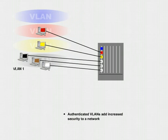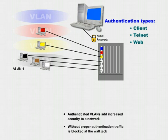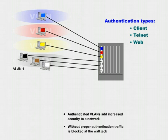A 7000-series OmniSwitch offers a feature known as Authenticated VLANs. Authenticated VLANs add increased security to a network by forcing users to log in with a valid username and password. Only upon proper authentication are users able to join any VLANs and have access to the network. Without properly authenticating, user traffic is blocked at the wall jack.